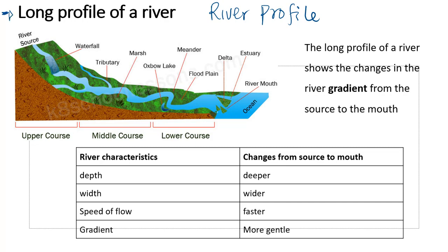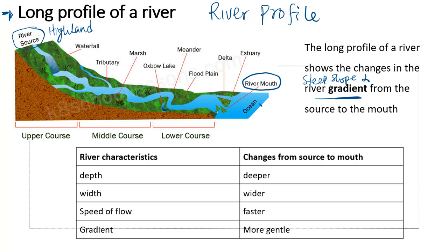We look at the long profile and the cross profile of a river. The long profile shows the features and characteristics — the changes that occur as the river moves from its source, which is usually a highland region, down to the mouth, which is usually into a sea or lake. The long profile shows changes in the river gradient, from a steep slope at the source to a gentle slope at the mouth.